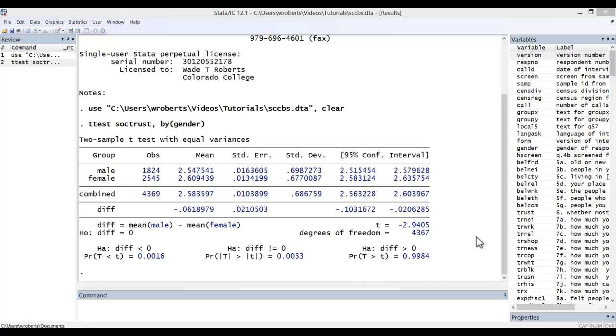It's quite possible for one to find a statistically significant difference between the means of two groups on some interval measure, even if that difference in means is quite small substantively speaking. This is particularly true in cases where you have a very large sample size.